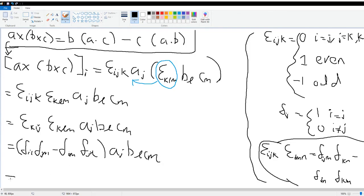Once again, we can rewrite this now, getting rid of the symbols back into the a's, b's, and c's. It's the same thing as b_i a_j c_j minus c_i a_j b_j.